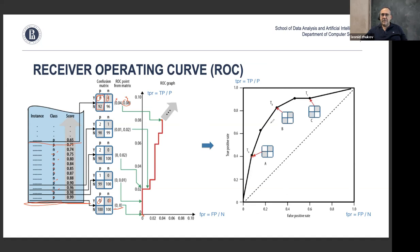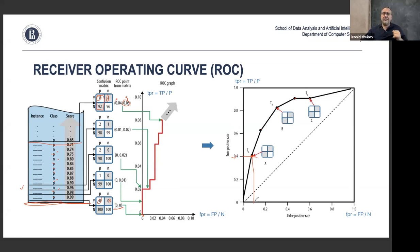For each threshold position we get a confusion matrix with certain TPR and FPR values, which we plot. Each data point corresponds to a particular sensitivity regime of your classifier. For example, if we select a threshold level at 0.4, the true positive rate is 0.4 and false positive rate is 0.15. With exactly the same model but a different threshold, the classifier performs differently.